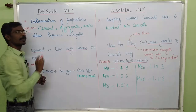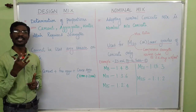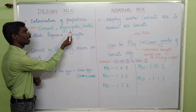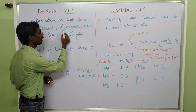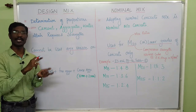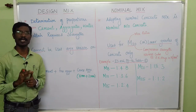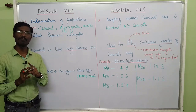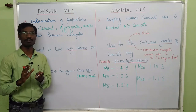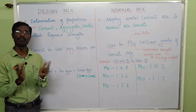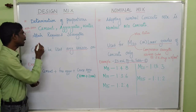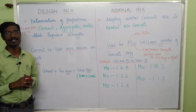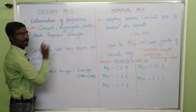Let's move on to the topic. The design mix means to determine the proportions of concrete like cement, aggregates, and water. Usually in aggregates, we will use fine aggregate and coarse aggregate. In coarse aggregate, we will use 20mm aggregates. But in design mix, we will use aggregates of 12mm as well as 20mm for different ratios, to attain the required strength. Such concrete is called design mix concrete.